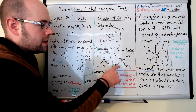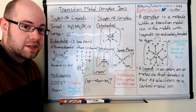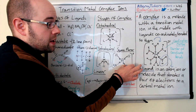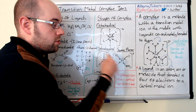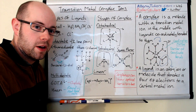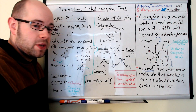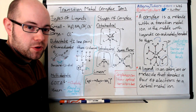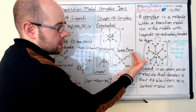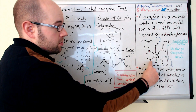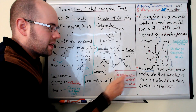Another thing to note is that instead of cisplatin, you can have transplatin, where the two ammonias are on opposite sides to the two chlorines. Some of these complexes can also display optical isomerism — all that means is that the complex has a non-superimposable mirror image, so you'd draw the complex and its mirror image.